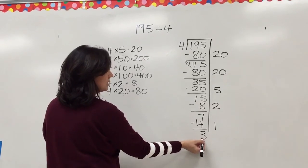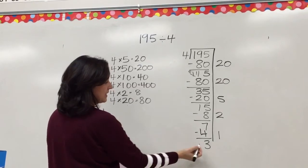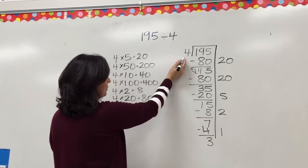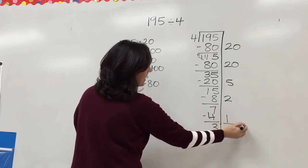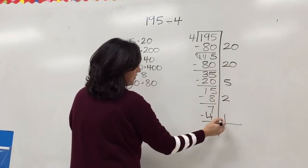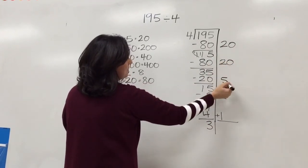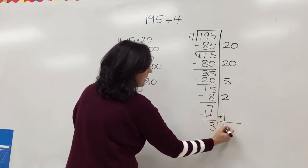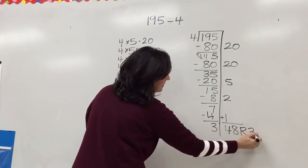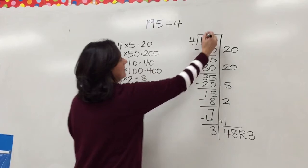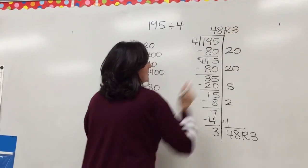When my leftovers are less than my divisor, I am finished. If I only have 3, I cannot make another group of 4. So I'm finished with the problem. These are all of my partial quotients. And when I add them together, 40, 45, 46, 47, 48, and tell what I have left over, I have an answer. 48, remainder 3.